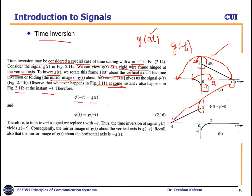We can write mathematically: phi(t) equals g(minus t). Therefore, to time-invert a signal, we replace t with minus t. Time inversion yields g(minus t), which is the mirror image of g(t) about the vertical axis. Note that the mirror image of g(t) about the horizontal axis is minus g(t), not g(minus t) — because flipping across the horizontal axis negates the amplitude.